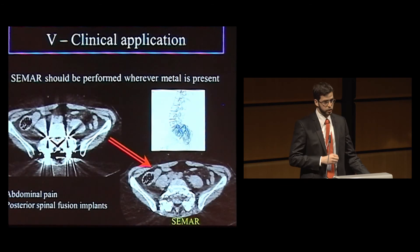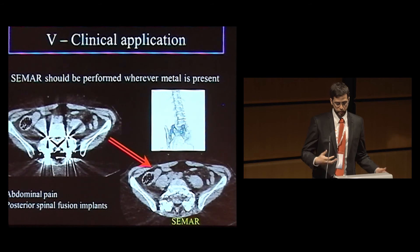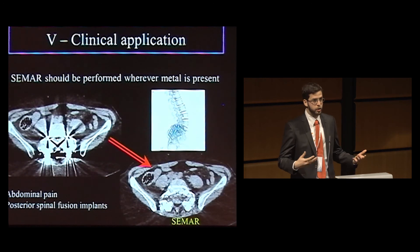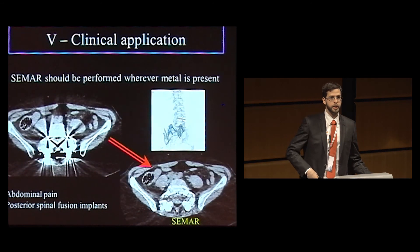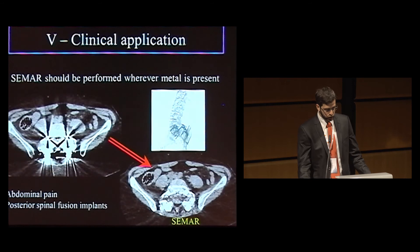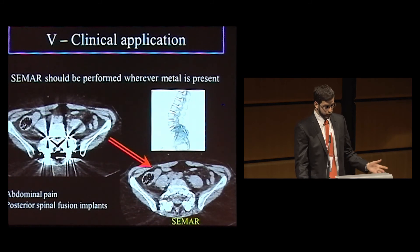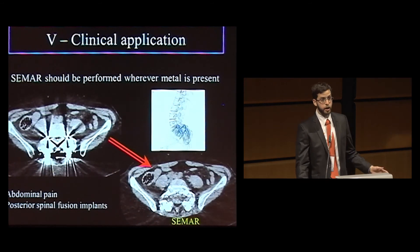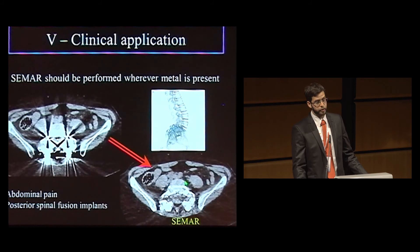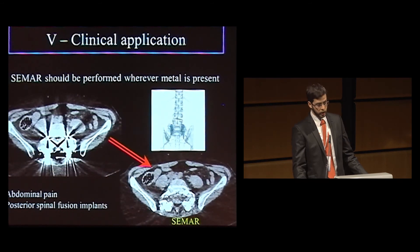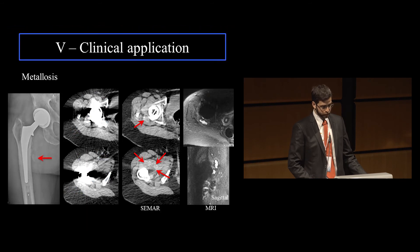CMAR can be performed for every application — not only for evaluation of periprosthetic soft tissues. In this case with a lot of metal artifacts in the lower lumbar spine, you can see the improvement in the evaluation of the pelvic organs when this algorithm is used.